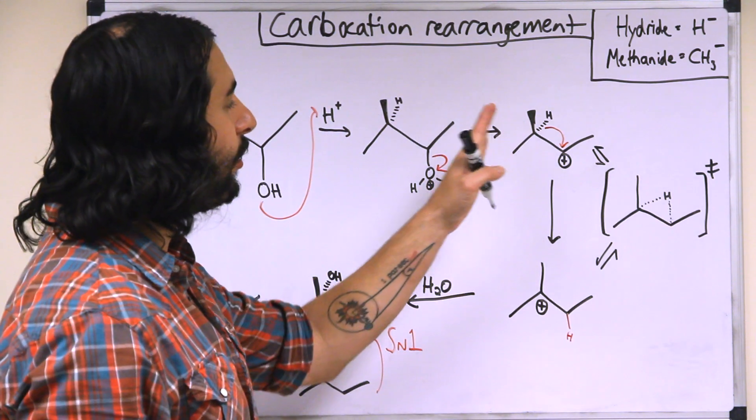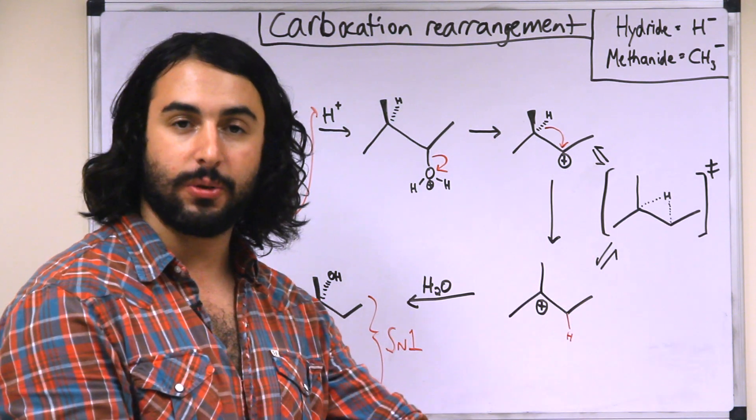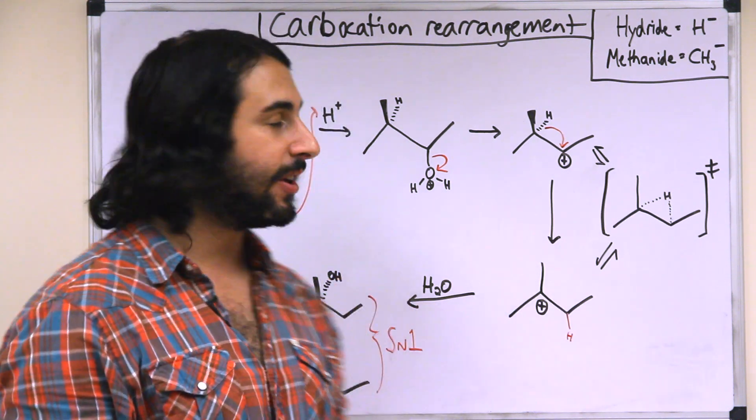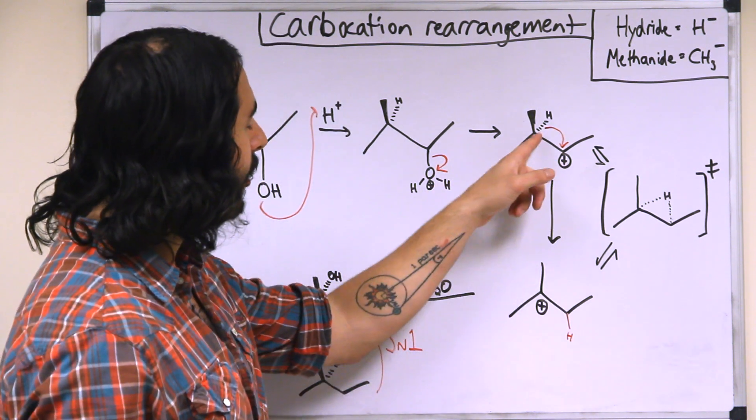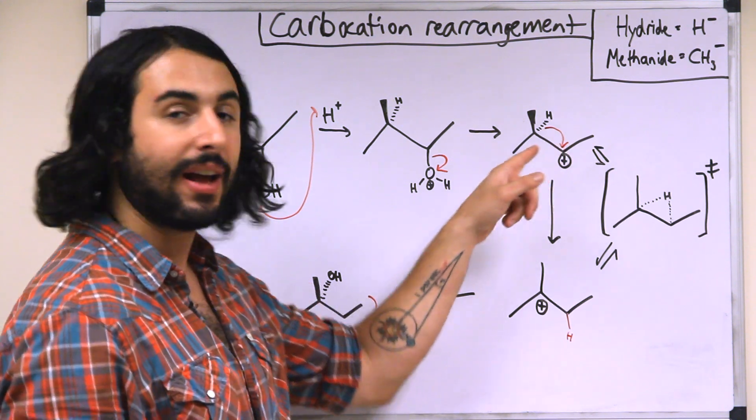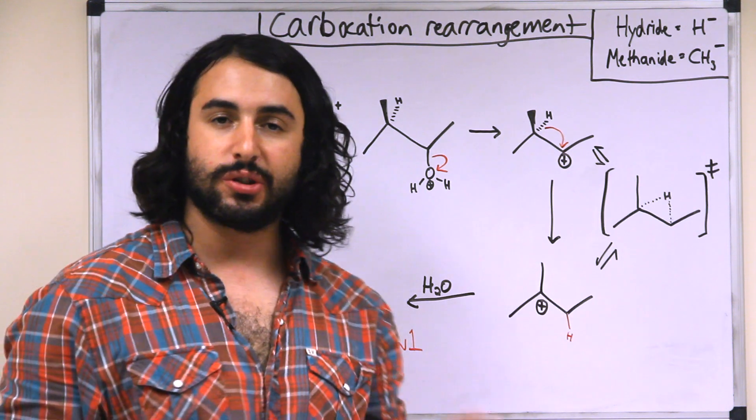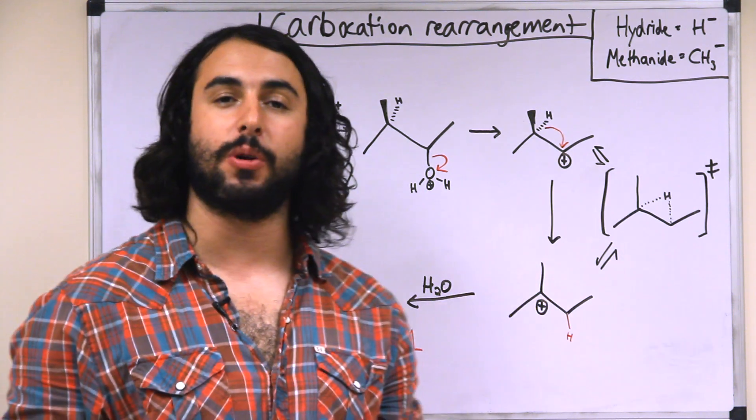So that's literally just going to hop from one carbon to the other. And the reason it will do this is because in doing so, it will neutralize the carbocation over here, but generate a new one on the tertiary carbon. So this is a more stable carbocation intermediate.